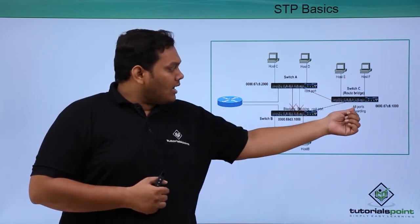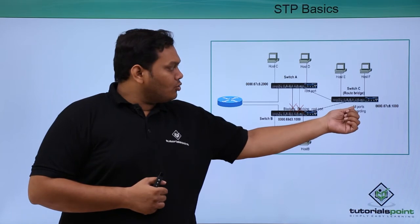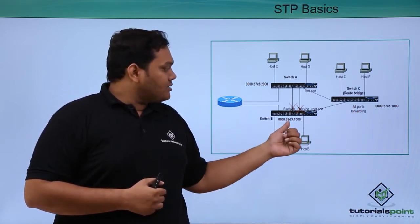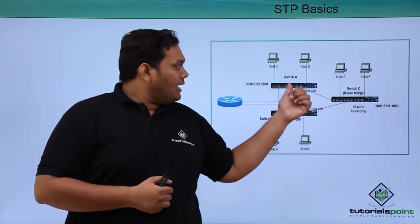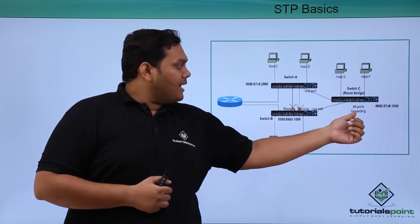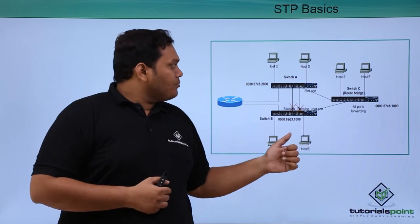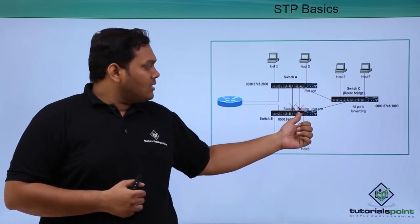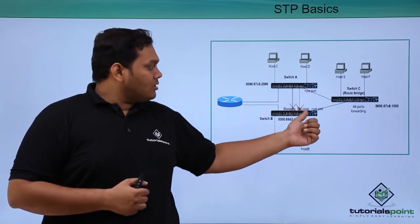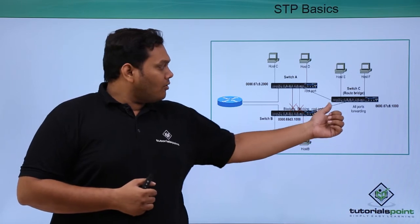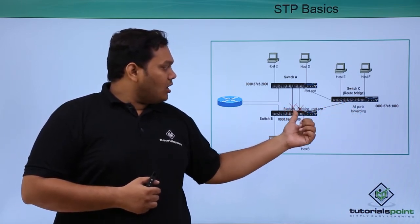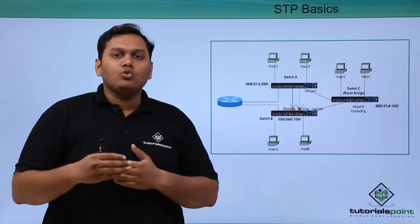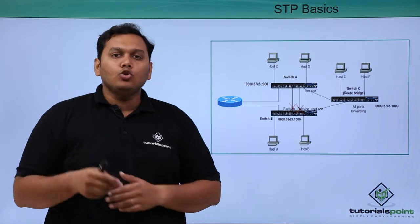All ports on the root bridge are in forwarding state, and you can see the MAC addresses mentioned for A, B, and C. This is how blocking occurs — except the root port forwarding to the root bridge, the rest are all blocked to prevent loops.